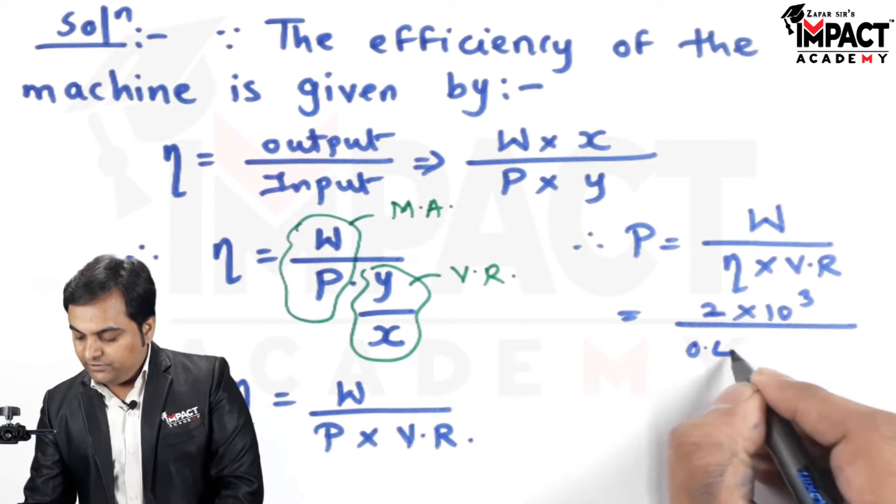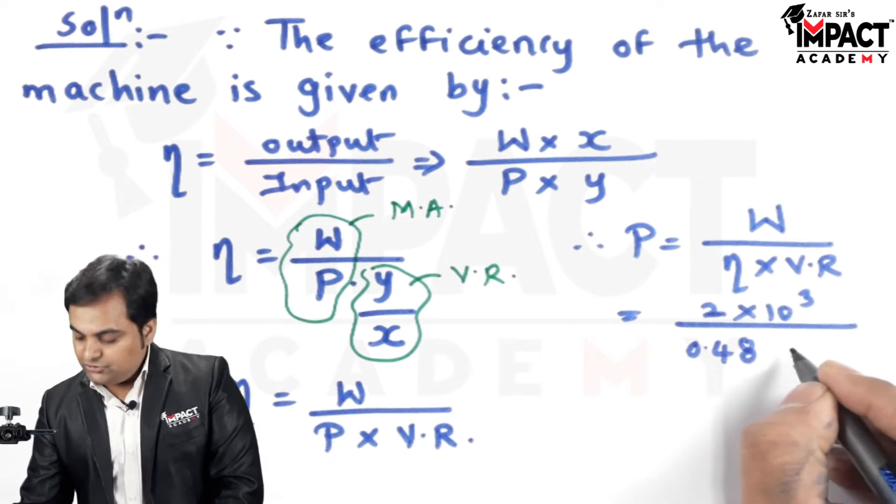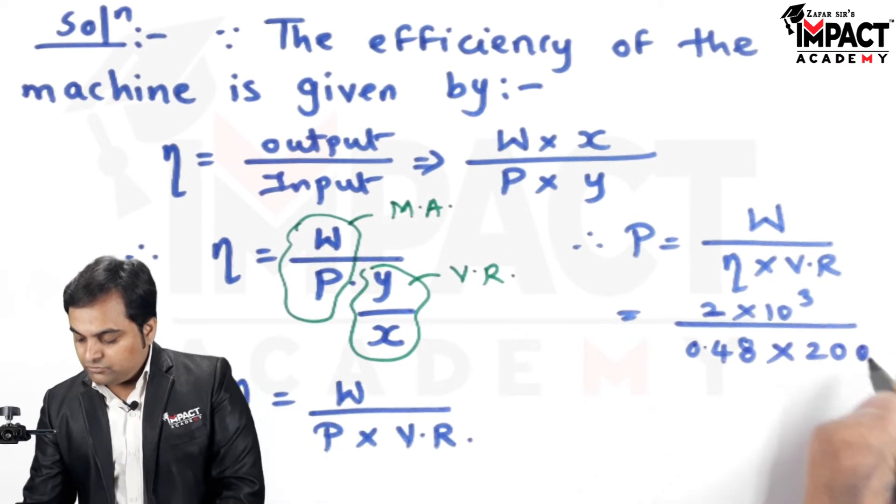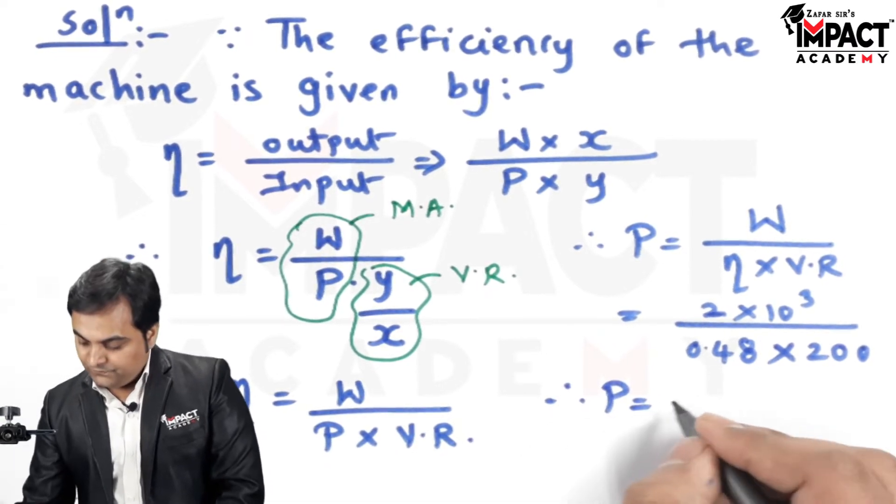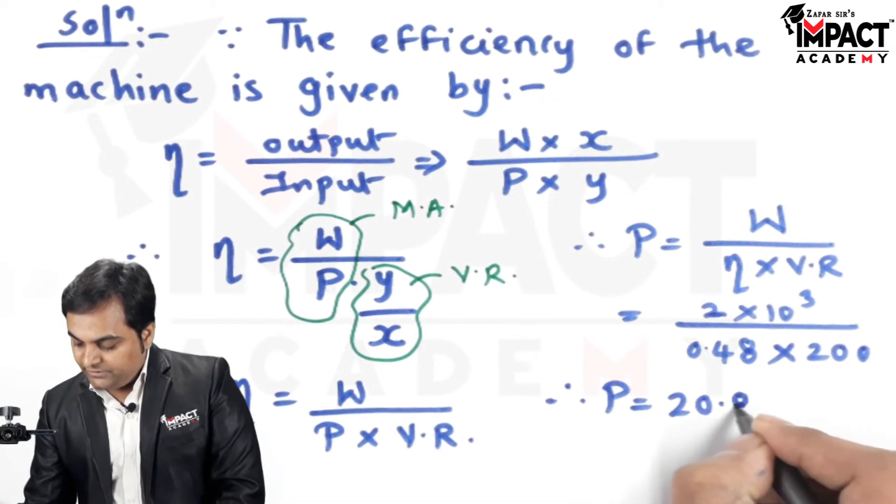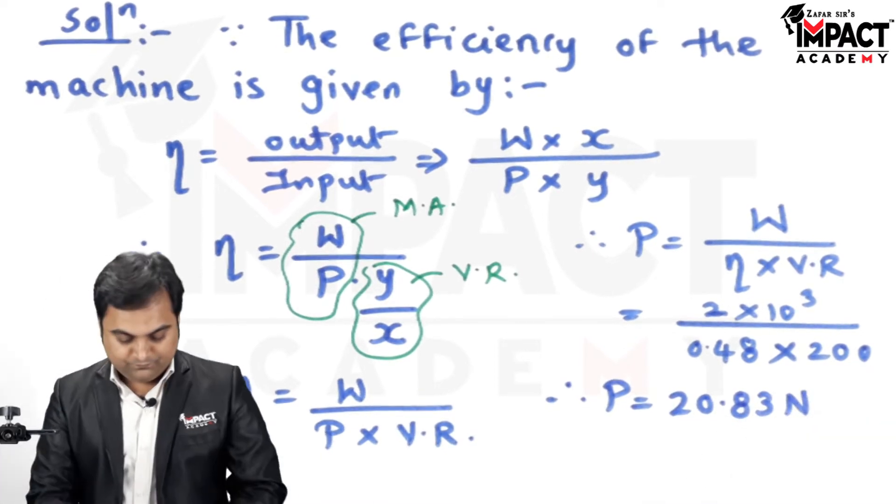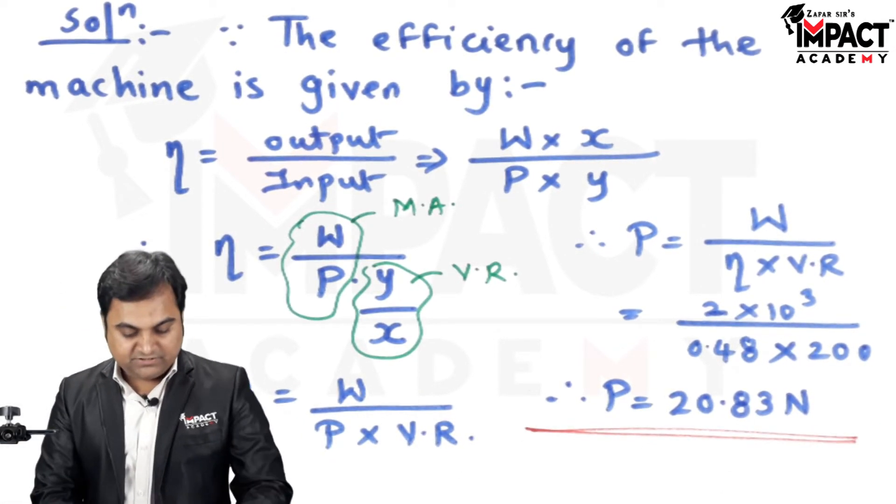Efficiency is 0.48 and the velocity ratio given is 200. So when we calculate this, the effort answer comes out to be 20.83 Newton. So that's the answer.